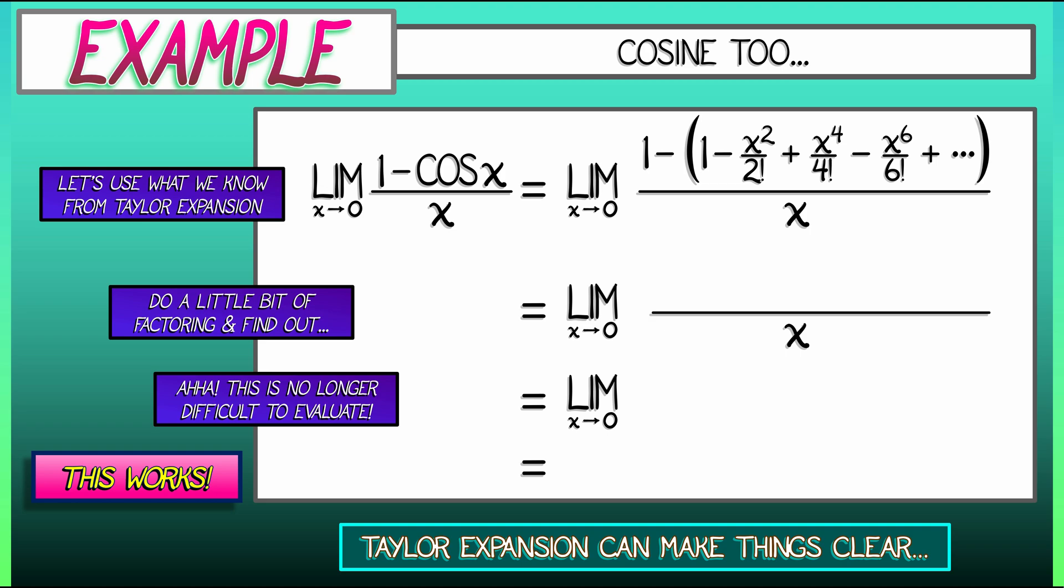Well, let's see. First of all, those 1s in the numerator, they cancel. And what is left over is minus quantity minus x squared over 2 factorial plus x to the fourth over 4 factorial, a whole bunch of other terms.